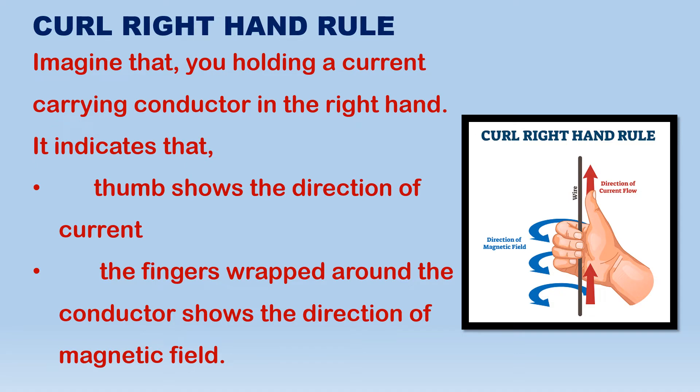Imagine that you hold the current carrying conductor in the right hand. In the straight line, you know the little iron particles are good conductors of electricity. Iron particles can conduct the electricity — that means electricity will pass.